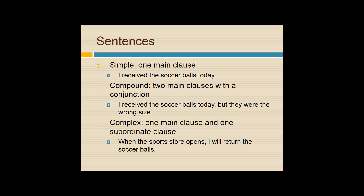Quickly, just go over types of sentences — I'll hold you to varying your sentence types, not necessarily the names. A simple sentence has one main clause: 'I received the soccer balls today.' A compound sentence has two main clauses with a conjunction: 'I received the soccer balls today, but they were the wrong size.' A complex sentence has one main clause and one subordinate clause: 'When the sports store opens' — subordinate clause — 'I will return the soccer balls' — main clause. Vary them in your writing.